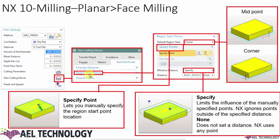Next is region start point. By default, we have a midpoint and a corner. If you want to use any of these, select from the default drop-down menu, or use the point-locating options in NX CAM to specify a particular entry point. Once you define a point, you must ensure it lies within the effective distance, which you set as a percentage of tool diameter or a specific mm or inch value. If the point does not lie within the effective distance, the software neglects it and defines its own start point.